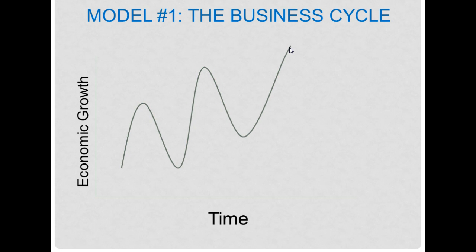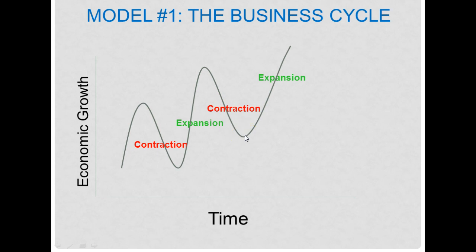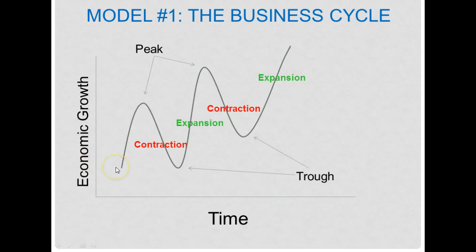It's not a big surprise that the business cycle has these ups and downs. First, I want to start with some terminology. Our first term is expansion — anytime the economy is growing, we call it an expansionary period. Conversely, anytime the economy is shrinking, we call it a contraction or contractionary period. When we're at the highest points of the business cycle, we call those peaks, and at the lowest points we call them troughs. This thing goes up and down in a pretty regular fashion.